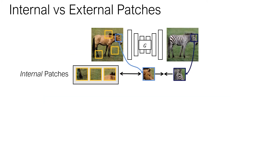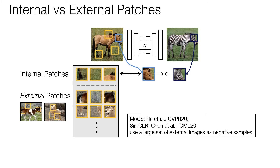Also, interestingly, we observe that the choice of negative patches is important. By default, we only sample the negatives from the same image, which we call internal patches. On the other hand, we can also include random patches from other images as additional negatives, which we call external patches. In representation learning, it's known that a large number of external negatives improve performance. Instead, here we work at the patch level, so we can use the same image as the source of our negatives. Indeed, when we tried to use the external patches as negatives, the output quality was worse.